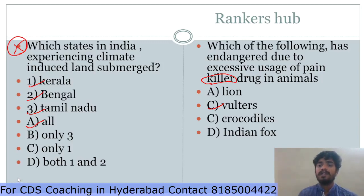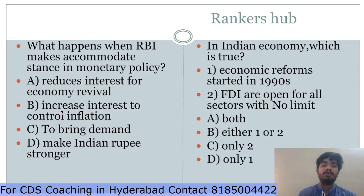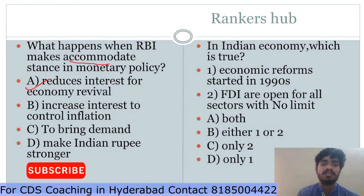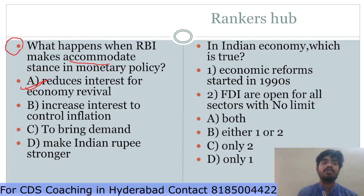What happens when the RBI makes an accommodative stance in monetary policy? The RBI makes two types of policies: tightening and accommodative. In an accommodative policy, the RBI reduces the interest rate to support economic revival. Since the last four quarters, the RBI has been maintaining an accommodative stance — reduced interest rates increase the credit level, which leads to economic revival. This type of question must be answered directly.